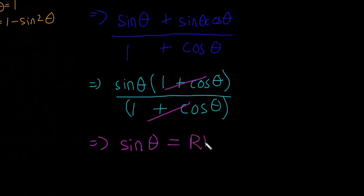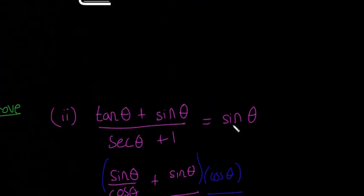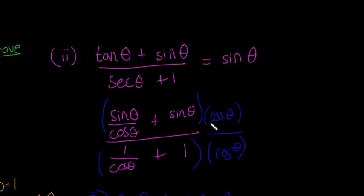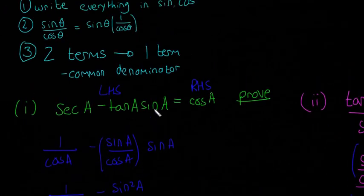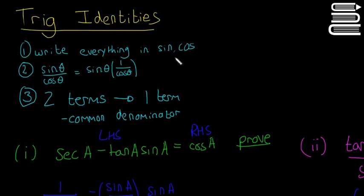That equals the right-hand side — sin(θ) — which is what we were trying to prove. That methodology also shows a useful trick: if you have a compound fraction, multiply the top and bottom by something to clear the denominators. Sometimes you have to multiply by more than one thing. Remember there are 5 or 6 identities from the last video you need to know by heart, and with this methodology every question should be workable. We'll look at more examples next.